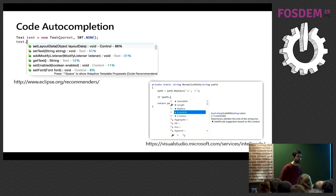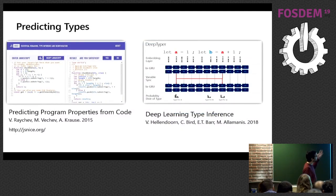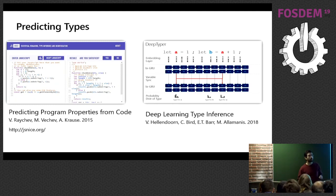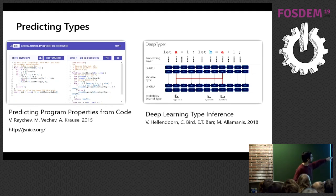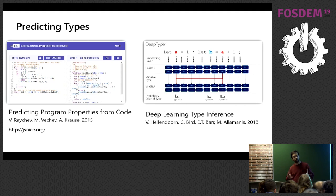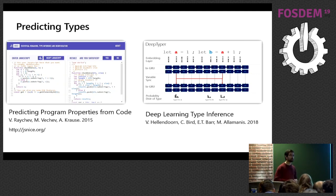One thing I wanted to show is this idea of predicting types. JavaScript is very common nowadays and there are a few pieces of work that take an untyped snippet of code and try to predict the most probable types. For example, you have a for loop and you write 'for i equals zero' — you probably know that i is an integer. So you get these patterns that you can learn from data and start predicting types, enabling migration from JavaScript to TypeScript or Flow.